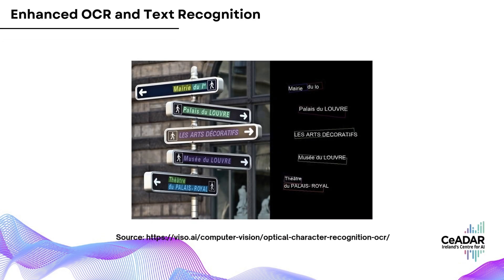MLLMs also greatly enhance optical character recognition capabilities. Traditional OCR is limited to recognizing plain text, but with MLLMs you can recognize and understand text embedded in complex backgrounds — like handwriting on a board, stylized fonts, or text in artistic posters — allowing for better data extraction from images or scanned documents, especially when text is mixed with visual elements. Imagine a student taking a picture of a whiteboard: an MLLM could not only transcribe the text but also understand diagrams and flowcharts, offering a rich summary or additional context.